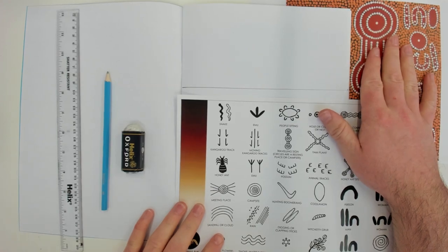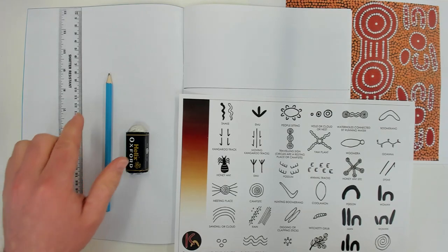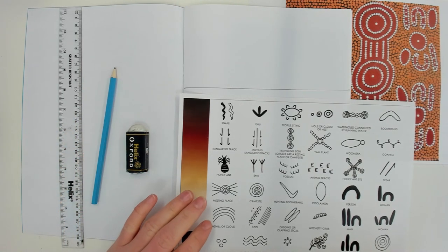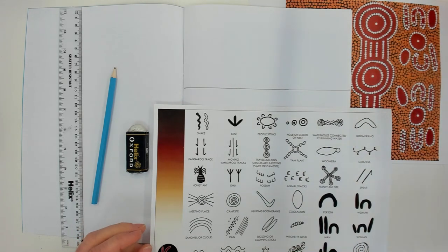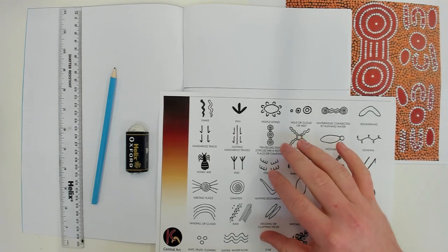Now for this lesson you will need your sketchbook or a piece of paper, a ruler just to mark off your sketchbook, a pencil, a rubber, and you can either Google Aboriginal symbols or I will attach this image to the homework upload.